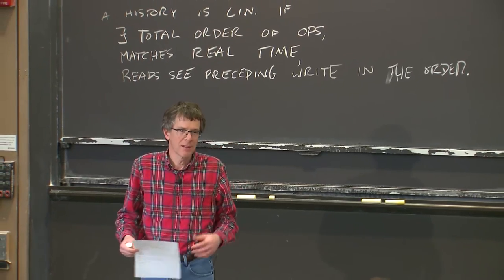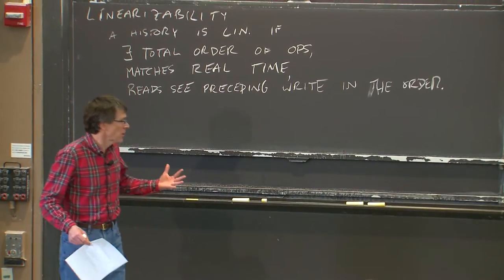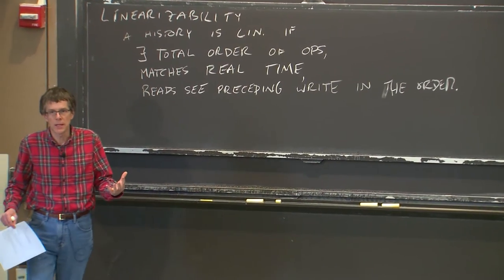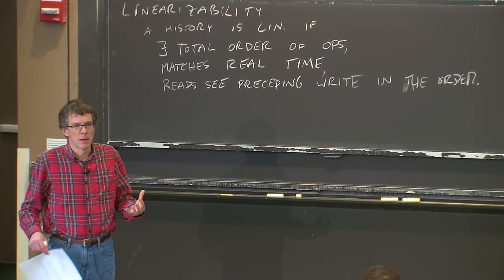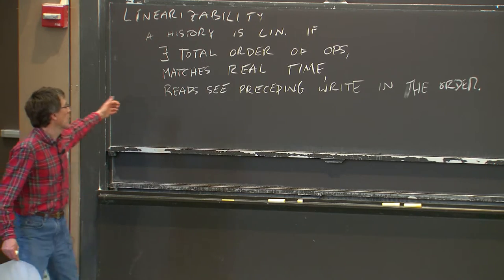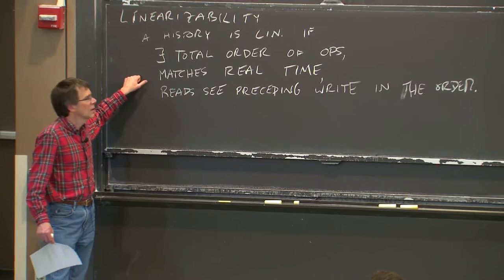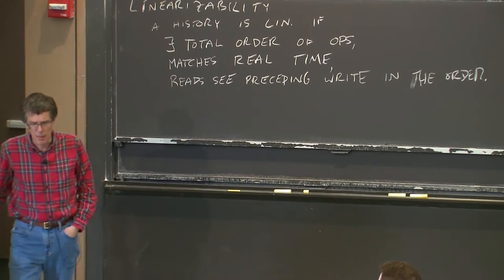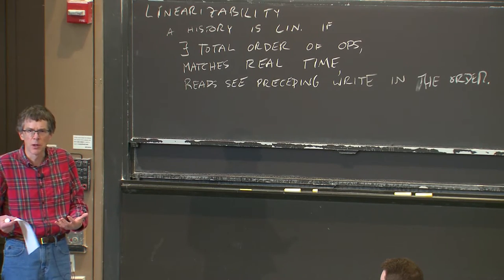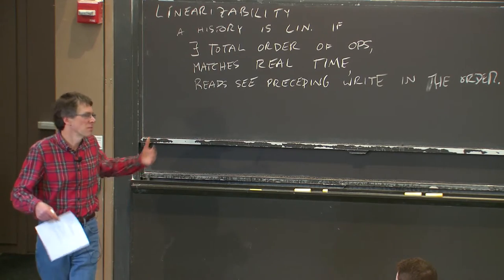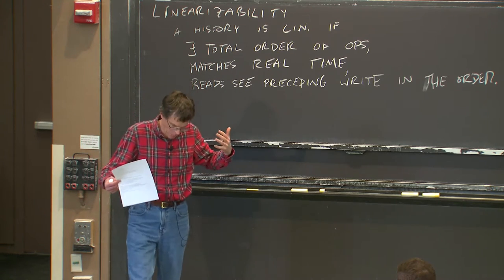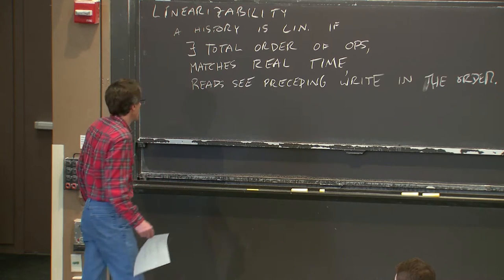Last time I started talking about linearizability, and I want to finish up this time. The reason we're talking about it again is that it's our standard definition for what strong consistency means in storage-style systems. For example, lab three needs to be linearizable. Sometimes this will come up because we're talking about a strongly consistent system and wondering whether a particular behavior is acceptable. Other times linearizability will come up because we're talking about a system that isn't linearizable and wondering in what ways it might fall short.